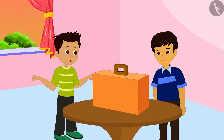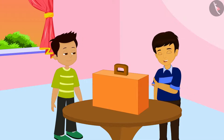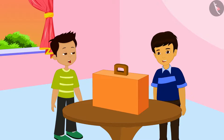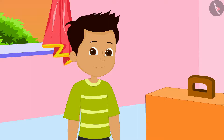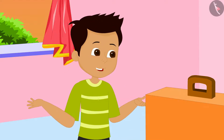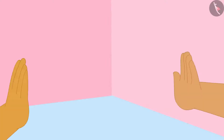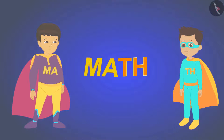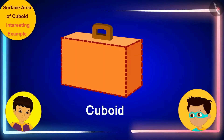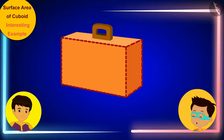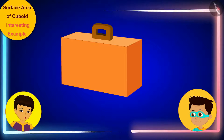Manas, what are you doing with this suitcase? Are you going on a holiday? No, Thomas. I want to sew the cover for this suitcase. But I am not able to understand how much fabric I will need to cover these 4 surfaces of the suitcase. Manas, we can find the solution to your question through mathematics. It's math time! The suitcase is a cuboid and all you have to do is cover its vertical surfaces. These vertical surfaces form the lateral surface of this cuboid shaped suitcase.